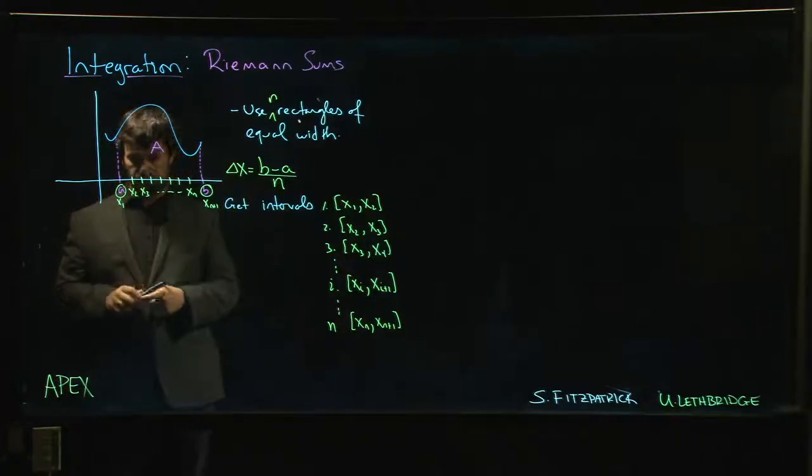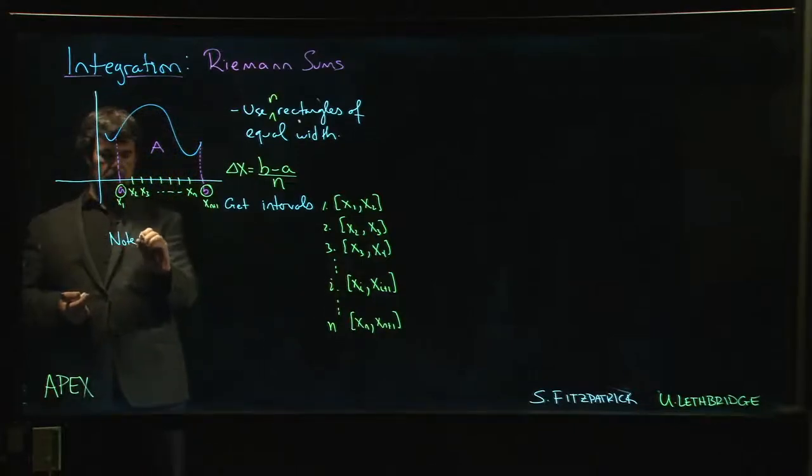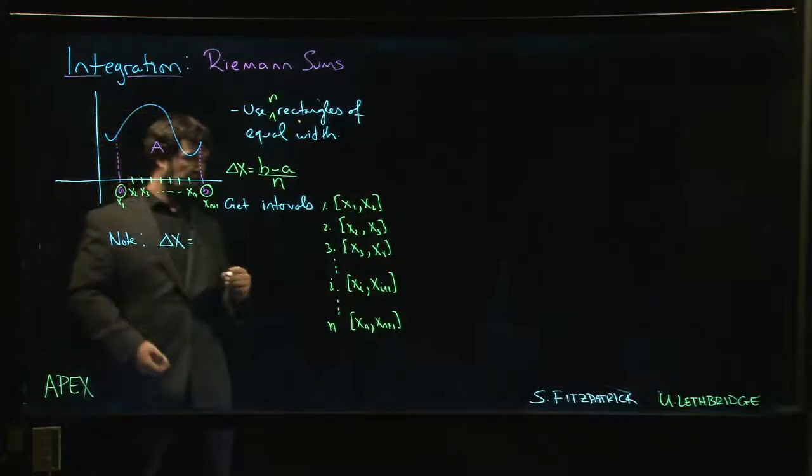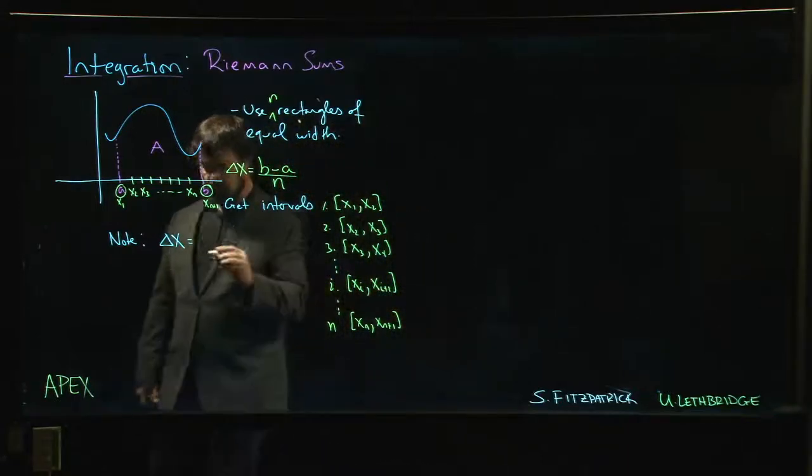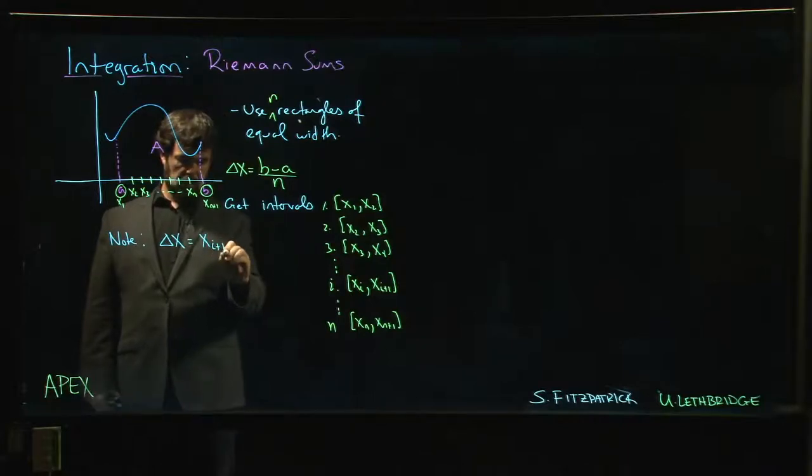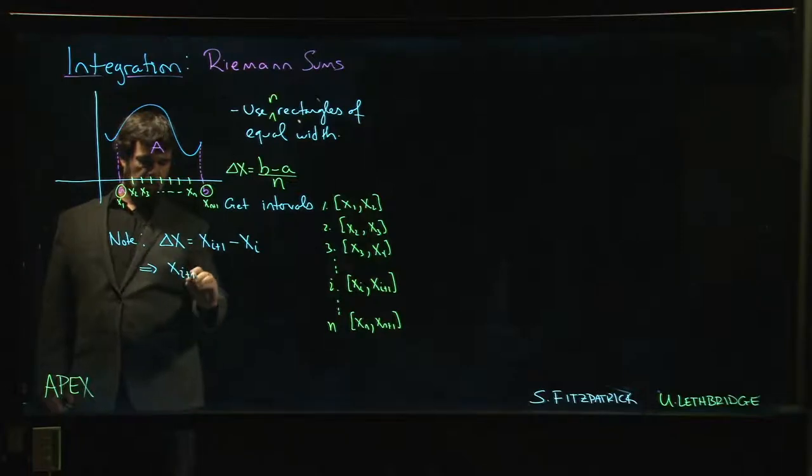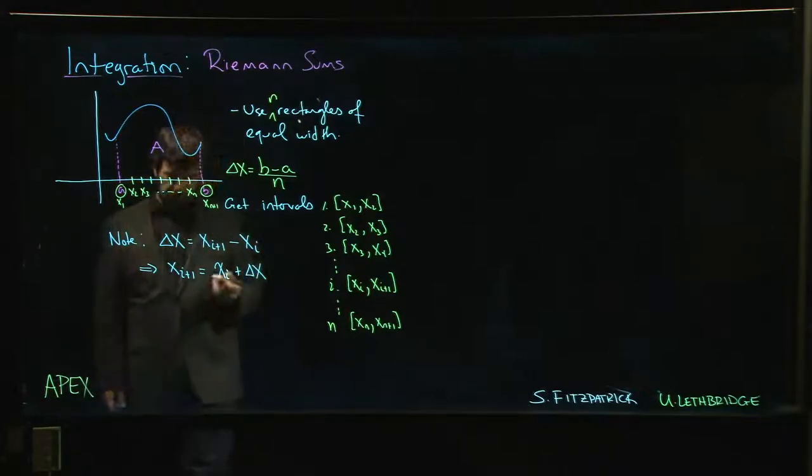One of the things that we'll notice is that delta x - another way to write delta x is, well, it's the distance between the two endpoints of each interval. We want all these intervals to be the same, so it's xi+1 minus xi. That means another way to write xi+1 is you order the previous point xi and you add on delta x.